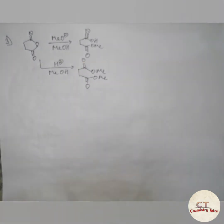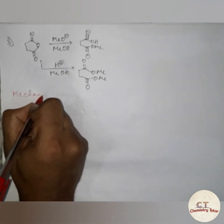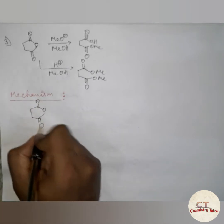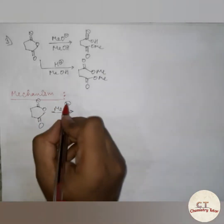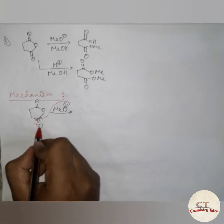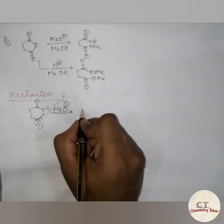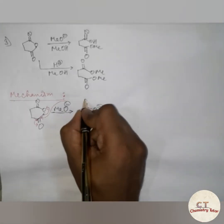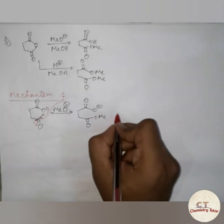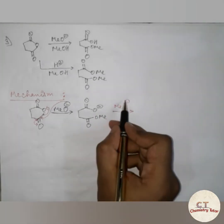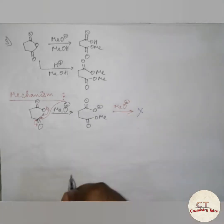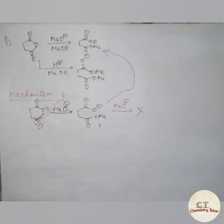Now let's see the mechanism for how the first product is formed. On reaction with MeO⁻, it is going to attack at the carbonyl carbon. The negative charge will go to the oxygen atom and come back to the electronegative oxygen atom. Further attack of MeO⁻ is not possible since it is a basic solution. So the product is formed by abstracting H⁺ from the solution.